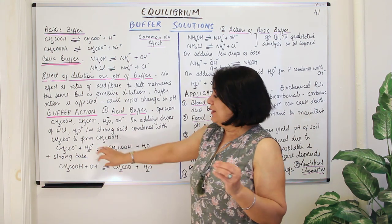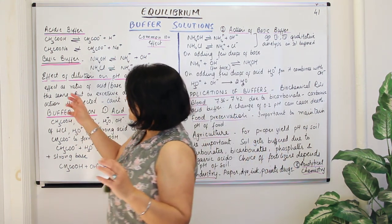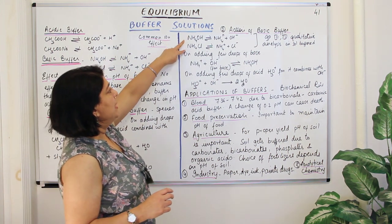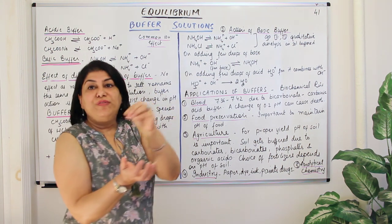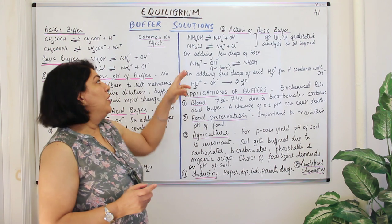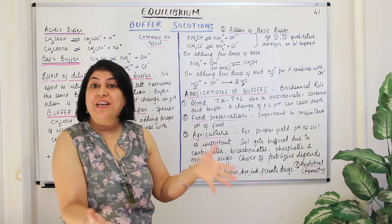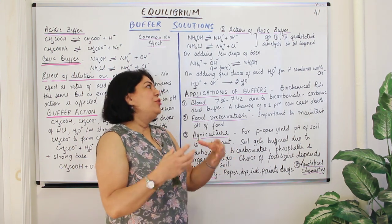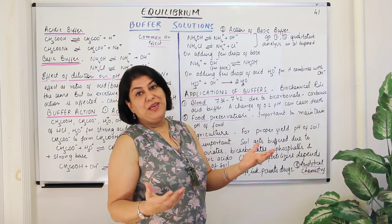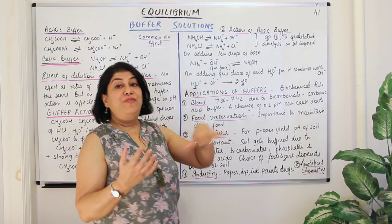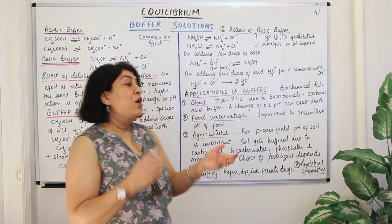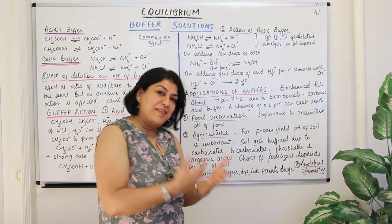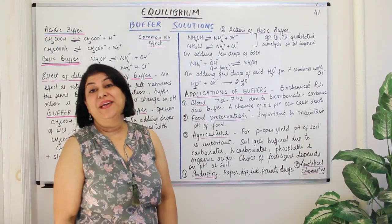The same mechanism applies to a basic buffer, for example ammonium hydroxide and ammonium chloride. On adding a few drops of base, OH⁻ ions combine with NH4⁺ already present in excess, getting blocked. Since OH⁻ is consumed, the H⁺ concentration also does not change and pH stays fixed. If acid is added instead, the H3O⁺ from the acid combines with the OH⁻ already present, forming neutral water and neutralizing it, leaving the pH unaffected.